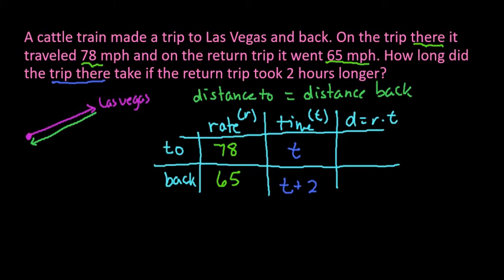So we would just take and multiply our distance times our rate. So we would take 78 times T, which is 78T. And 65 times T plus 2. And I would go ahead and just distribute this in to make it easier to work with. So we really have 65T plus 130. And now we have enough information to set up our problem.